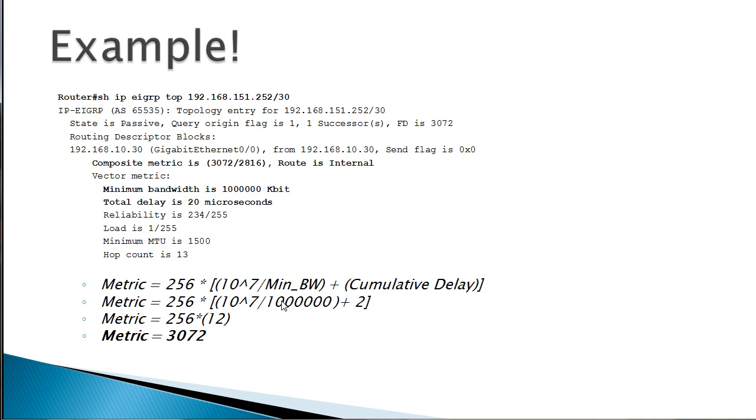10 to the 7th over the minimum bandwidth was 1,000,000 kilobits, and then notice I have a 2 here, but the delay here said it was 20 microseconds. So why would I put a 2? Well remember, delay is in terms of what they call tens of microseconds. So how many tens of microseconds is 20 microseconds? Well, we simply divide by 10, that's where we get our 2.